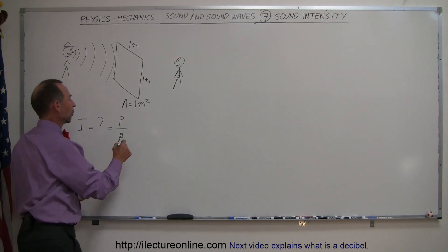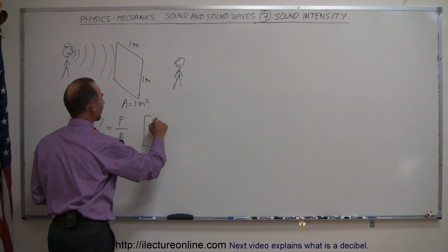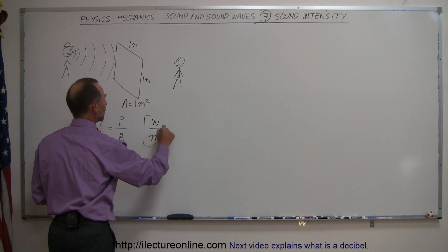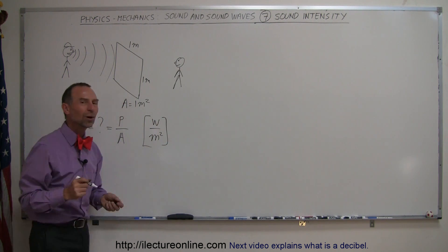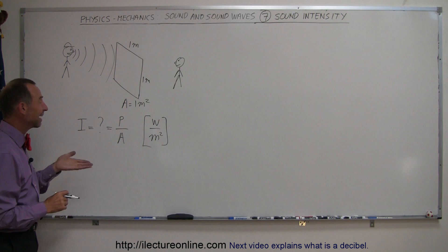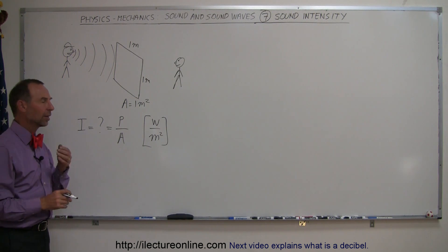And the units of that, of course, if we describe it by units, is watts for power divided by square meters. So it's watts per square meter that defines the intensity of the sound.